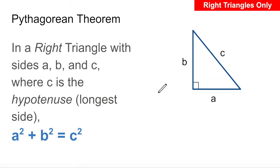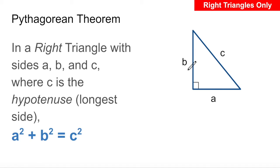Before we dig into Pythagorean Theorem, let's note a couple things. We use this little square bracket in the corner of an angle to indicate that it's a right angle, which measures 90 degrees. In the previous video, I pointed out that uppercase letters are used to label unknown angles, and in this video you can see that lowercase letters are used to label sides.